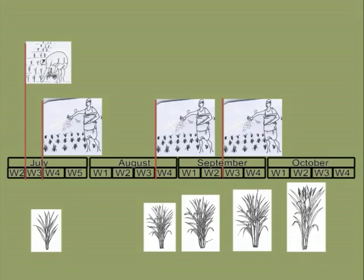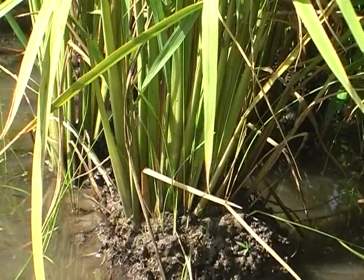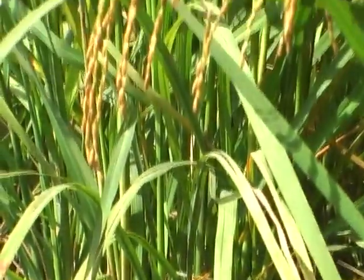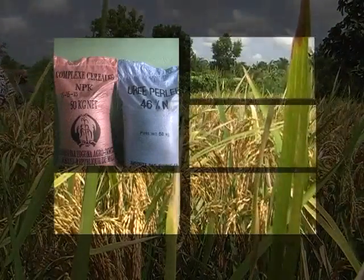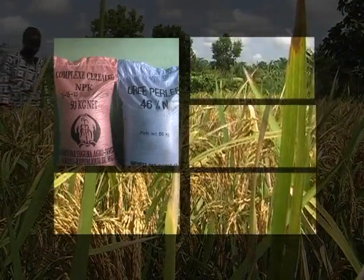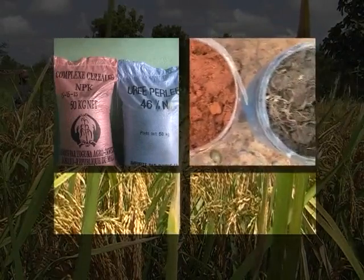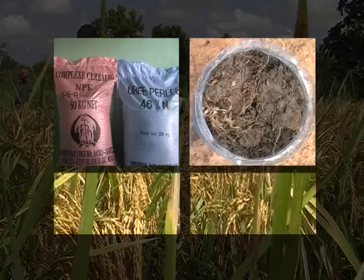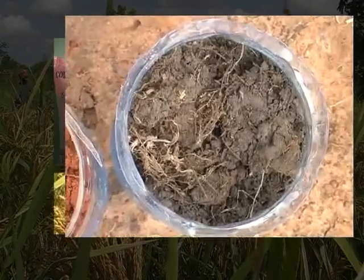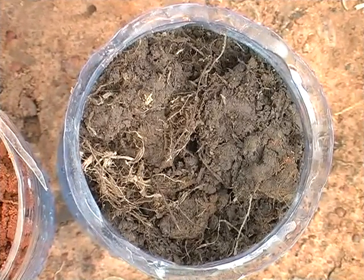So rice plants benefit from nitrogen at all three development stages: to make the foundation, to construct the walls and roof, and to fill the granary. Now that we know all about nutrients, let's have a closer look at the soil structure. As different types of soil retain nutrients differently, it will affect how you should manage your soil fertility.